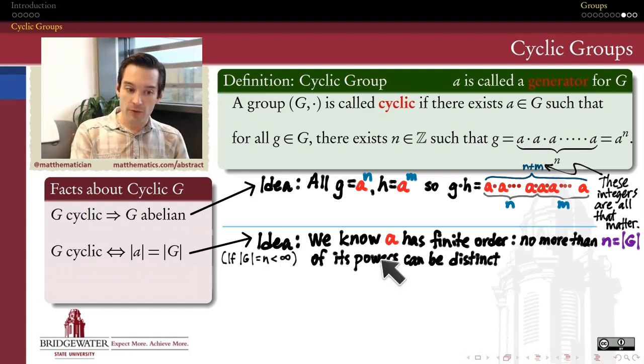Then we know for sure that the order of the generator A has to be finite. Because its powers generate all the elements of G, but there are only finitely many elements of G. So no more than N of the powers of A can be distinct from one another, because they're all elements of G, which has finite order.